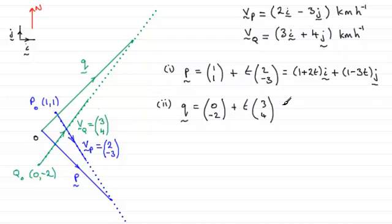And as for Q, well that's going to be 0 plus 3t in the i direction or just simply 3ti. And for j, it'll be minus 2 plus 4t. Or you could write it as 4t minus 2 in the j direction. Okay? So that's parts 1 and 2 then.